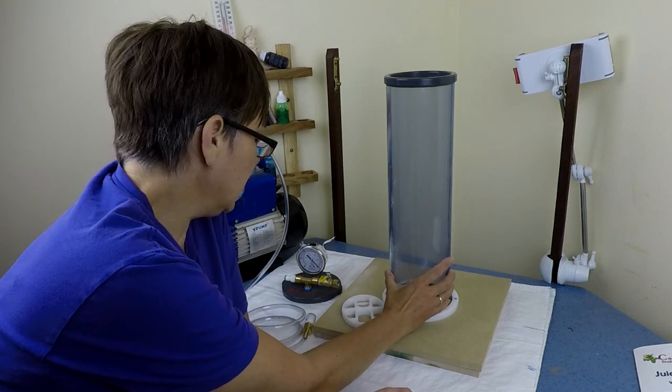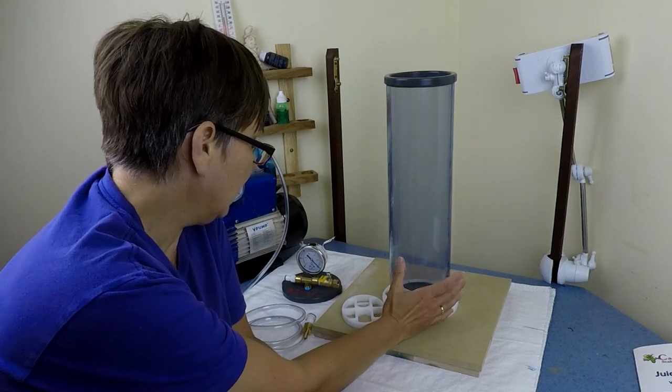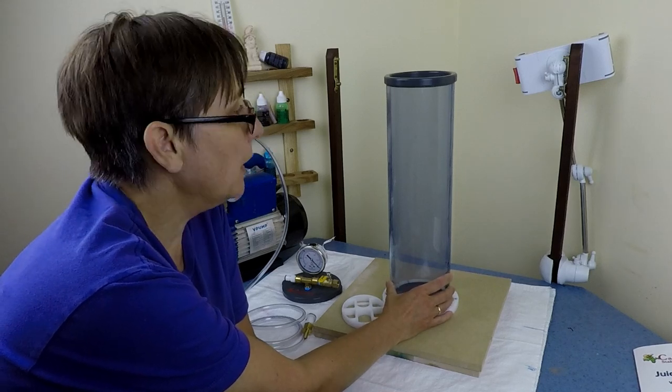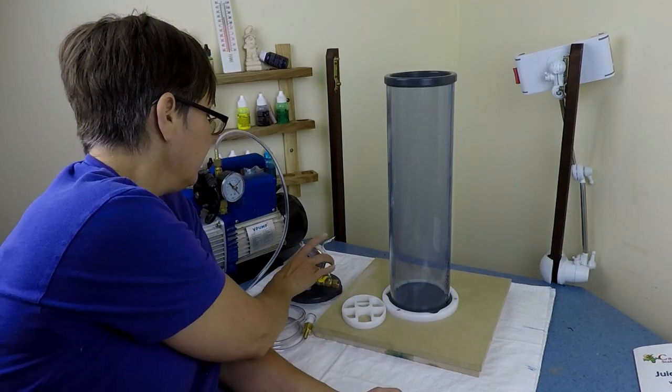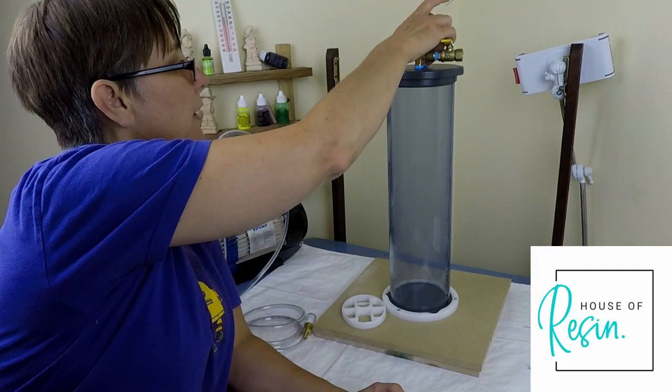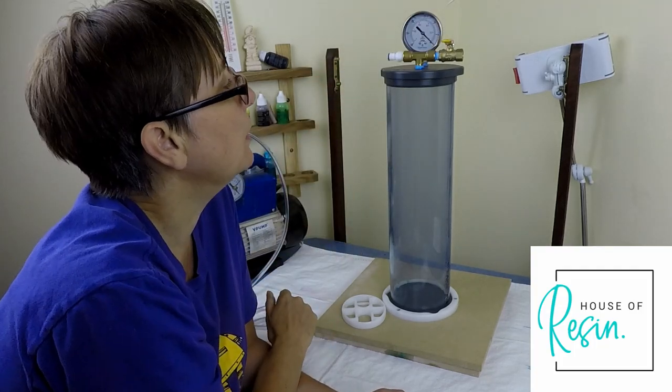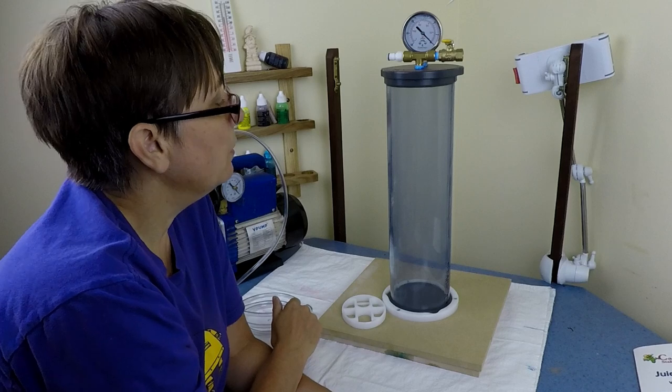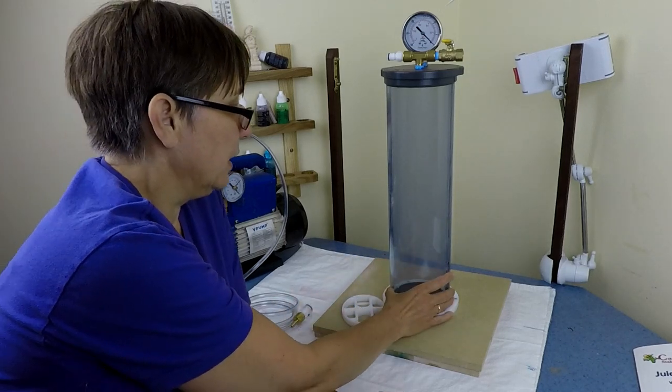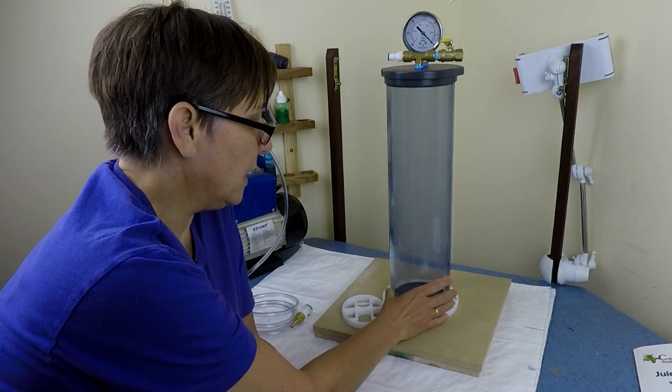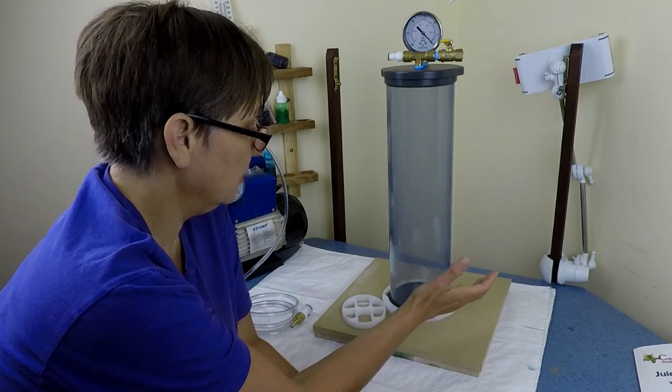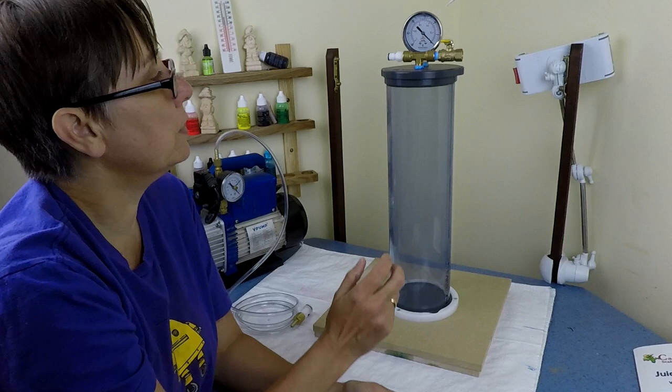This is the Cactus Juice stabilizing resin chamber by Turntex, and House of Resin kindly lent me this just to test out. Today is going to be the first time that I try it. The first impressions of this chamber are just how amazingly well it's built for starters, and the design is so well done.